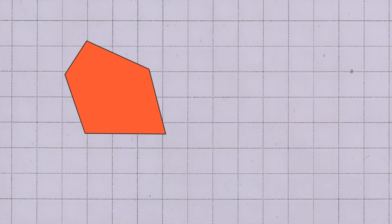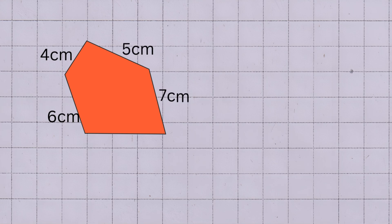In this example, the first side measures four centimeters, the second side measures six centimeters, the third side measures five centimeters, the fourth side measures seven centimeters, and the fifth side measures nine centimeters.